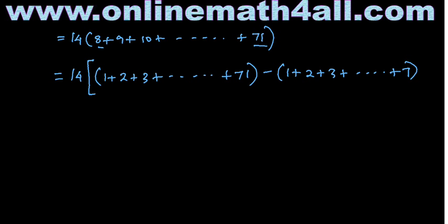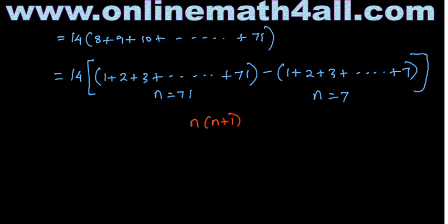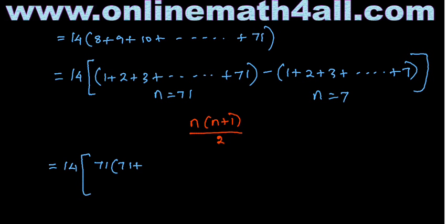I need the sum from 8 to 71. But since the formula works from 1, I find the sum from 1 to 71 and subtract the sum from 1 to 7. Here, n equals 71 for the first part and n equals 7 for the part to be subtracted. The formula is n(n+1)/2. So the expression becomes: 14 times [71 times 72 divided by 2, minus 7 times 8 divided by 2].